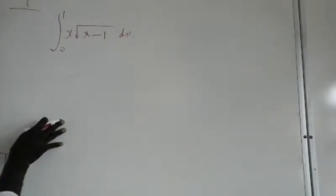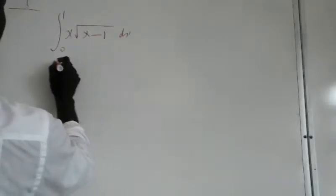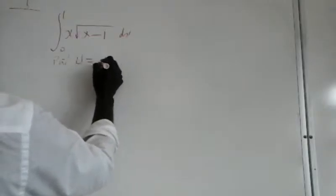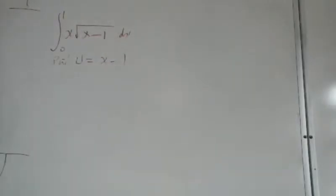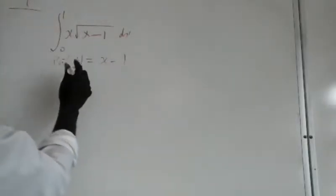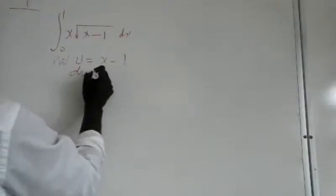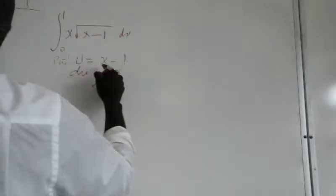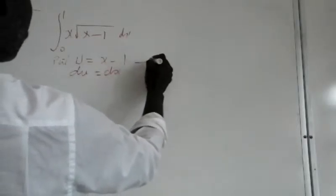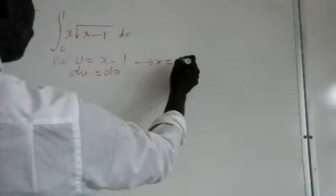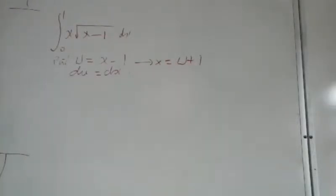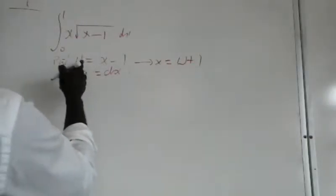Once again, to simplify the matter, we make a substitution here. I think the most convenient substitution will be let u equal x minus 1. If u equals x minus 1, it follows that du equals dx, and x equals u plus 1.